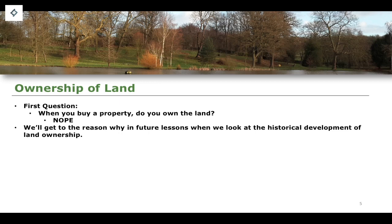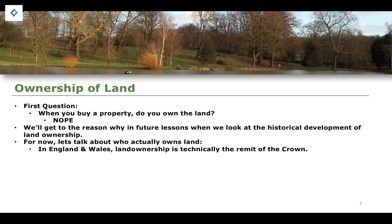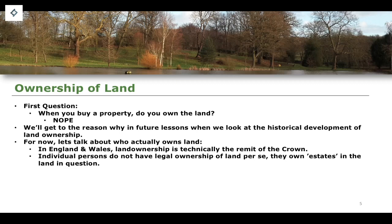We'll get into the reason why in future lessons when we look at the historical development of land ownership. But for now, let's talk about the actual ownership of land and the idea of an estate in land. In England and Wales, land ownership is technically the remit of the crown. Only the crown can own land, and therefore all the property you buy is not actually a transfer of ownership from a previous owner to you. Individual persons do not have legal ownership to land per se — they own what are known as estates in land.